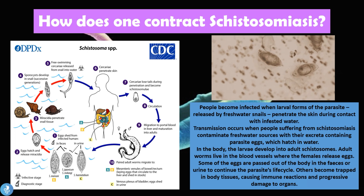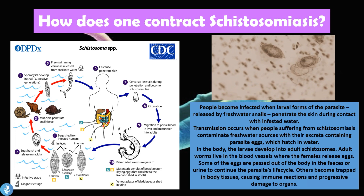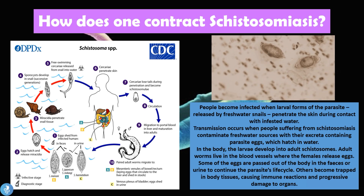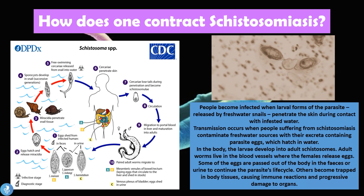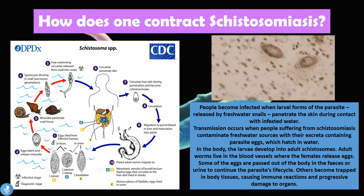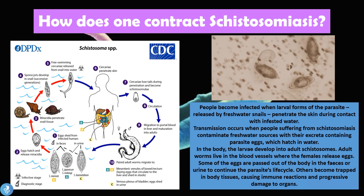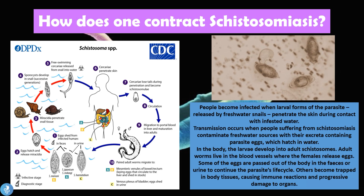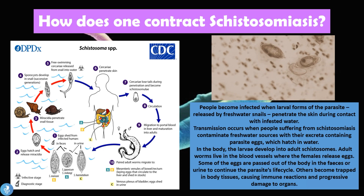People become infected when the larval forms of the parasite are released by freshwater snails, which penetrate the skin during contact with infested water. Transmission occurs when people with Schistosomiasis contaminate freshwater sources with their excreta — feces containing parasitic eggs — which then hatch in the water. In the body, the larvae develop into adult schistosomes, and the adult worms live in the blood vessels where females release more eggs. Some eggs are passed out in feces or urine, while others become trapped in body tissues, causing immune reactions and progressive organ damage.